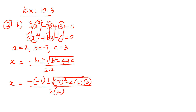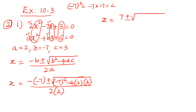Now let us simplify. Minus of minus 7: minus into minus is plus, so we get plus 7. Then write the plus or minus symbol as it is under the square root. The value of (−7)² equals −7 × −7, which is positive 49. Then multiplying: −4 × 2 = −8, and −8 × 3 = −24. So we have 49 minus 24 under the square root, divided by 2 × 2 = 4.